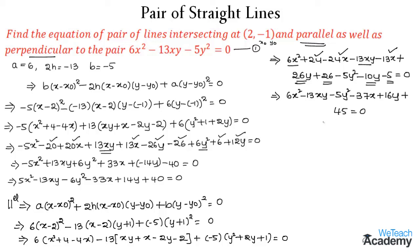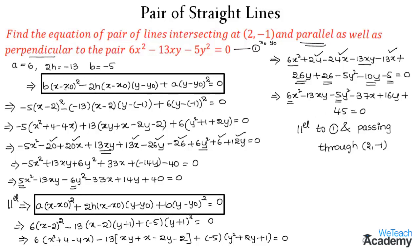This is the equation of a pair of lines parallel to equation 1 and passing through the given point (2, -1). Note that the x² and y² coefficients are interchanged in the perpendicular equation, whereas in the parallel equation both coefficients remain the same. Make a note of these formulas for finding equations of pairs of lines perpendicular and parallel to a given pair. Hope you enjoyed — for more videos visit our website. Thanks for watching, have a nice day.